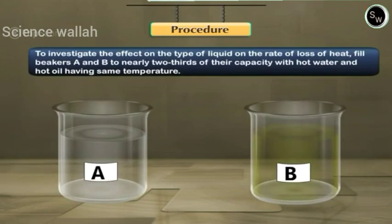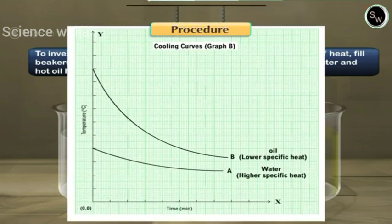To investigate the effect of the type of liquid on the rate of loss of heat, fill beakers A and B to nearly two-thirds of their capacity with hot water and hot oil having same temperature. When cooling curves are plotted, it is found that the liquid having small specific heat has larger cooling rate.